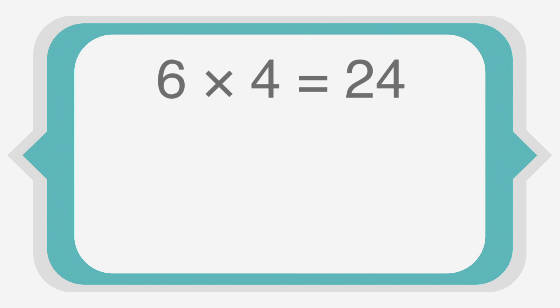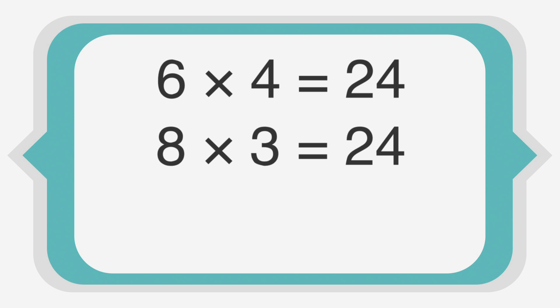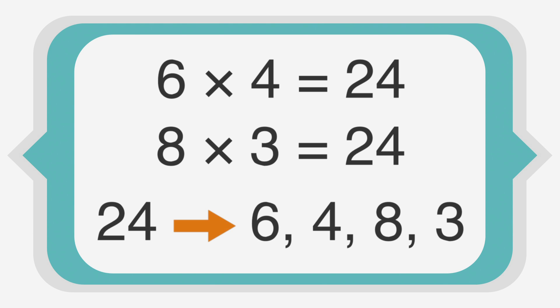These are called common multiples. Let's look at an example. If 6 times 4 equals 24, and 8 times 3 equals 24, then 24 is a common multiple of 6, 4, 8, and 3.